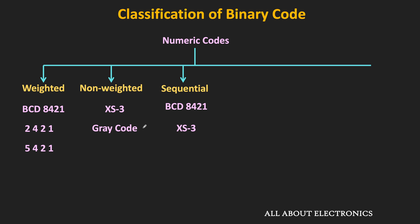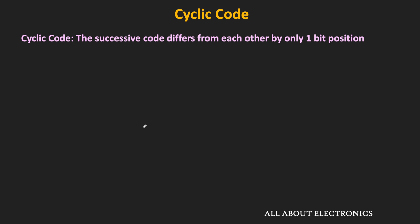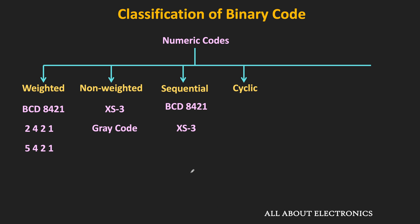There are also binary codes which are cyclic codes. In a cyclic code, successive codes differ from each other by only one bit position. For example, in the gray code, successive codes differ by only one bit position. If you take decimal numbers 3 and 4, their gray codes differ by only one bit. Likewise, the codes for 9 and 10 also differ by only one bit. So gray code is the example of a cyclic code.